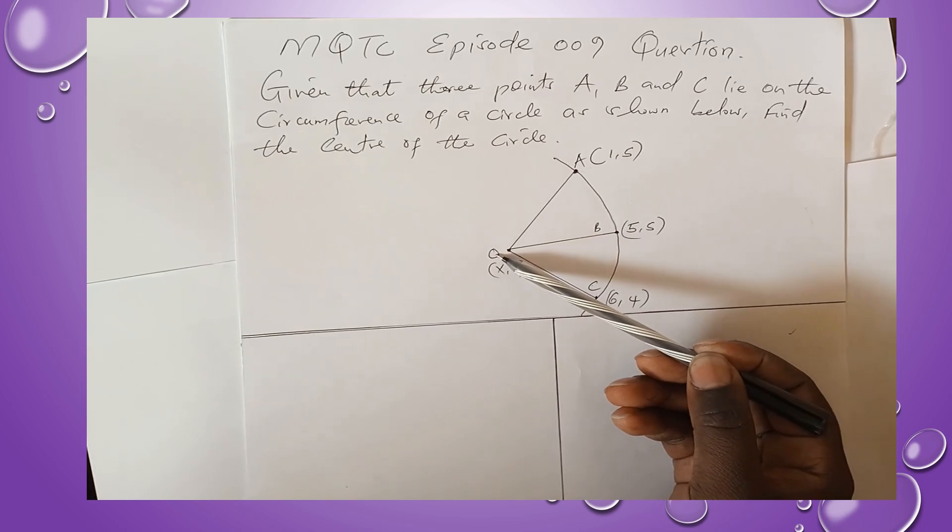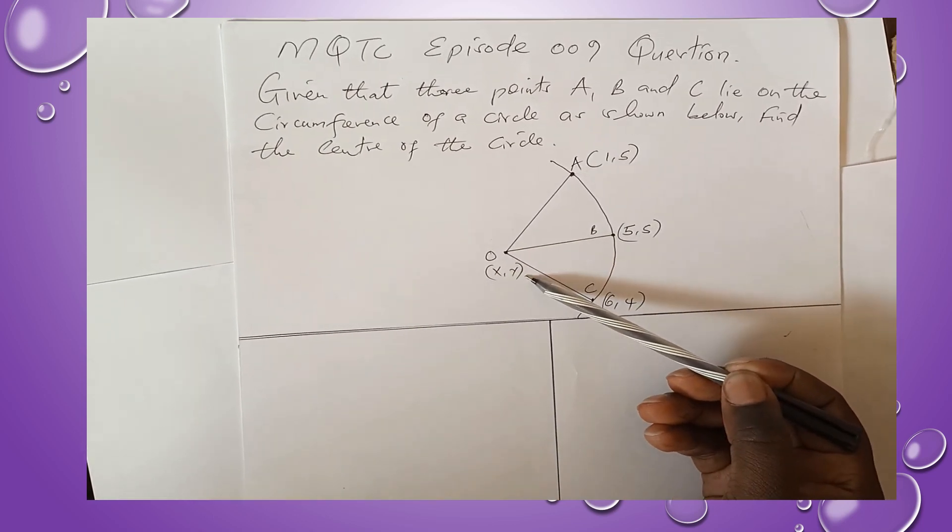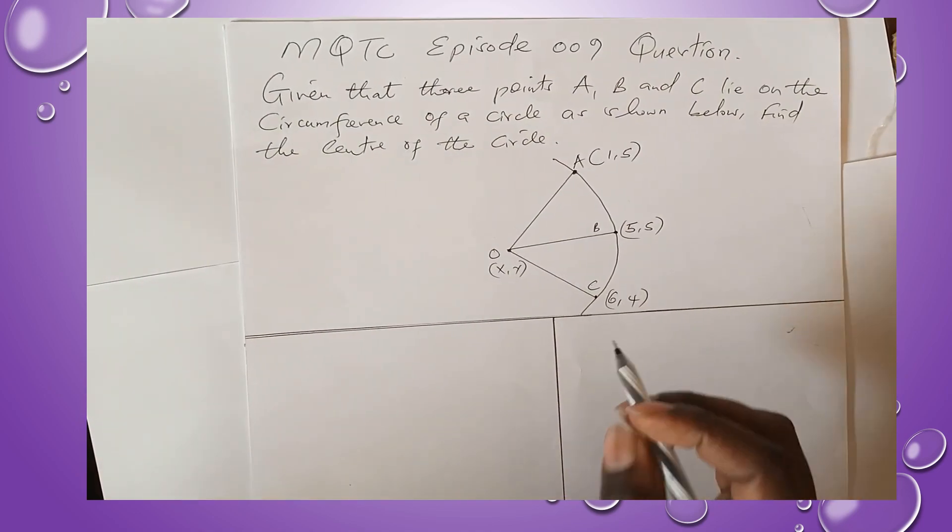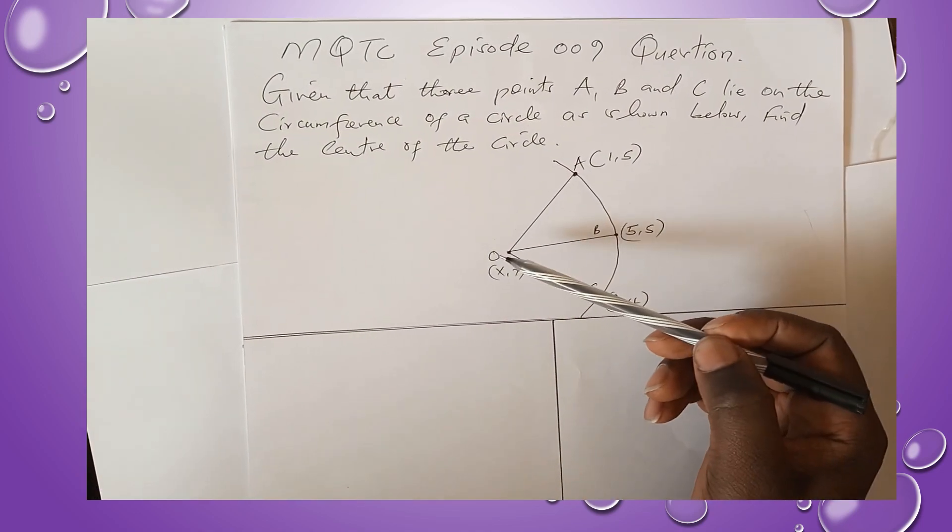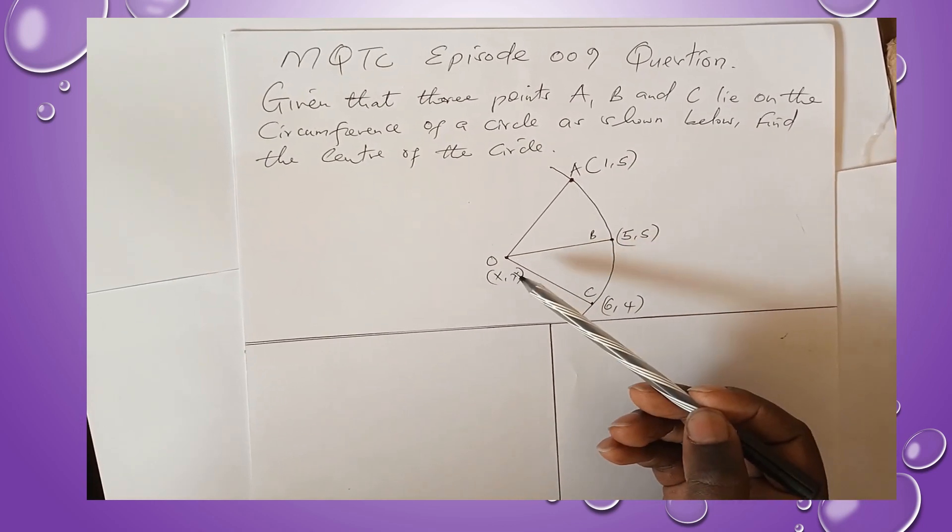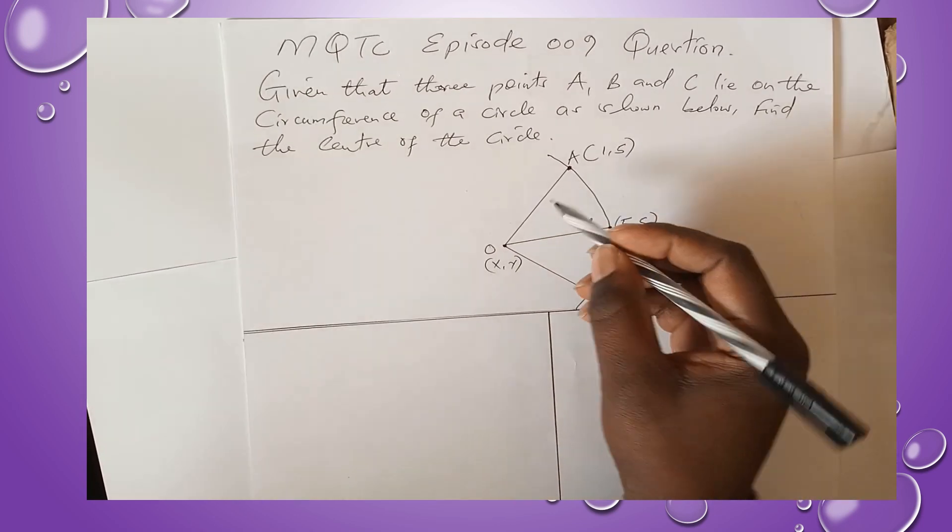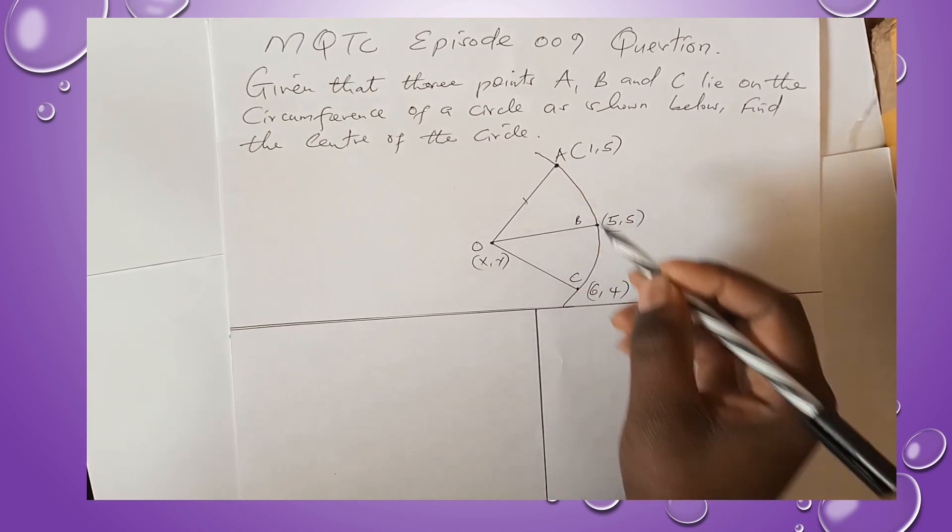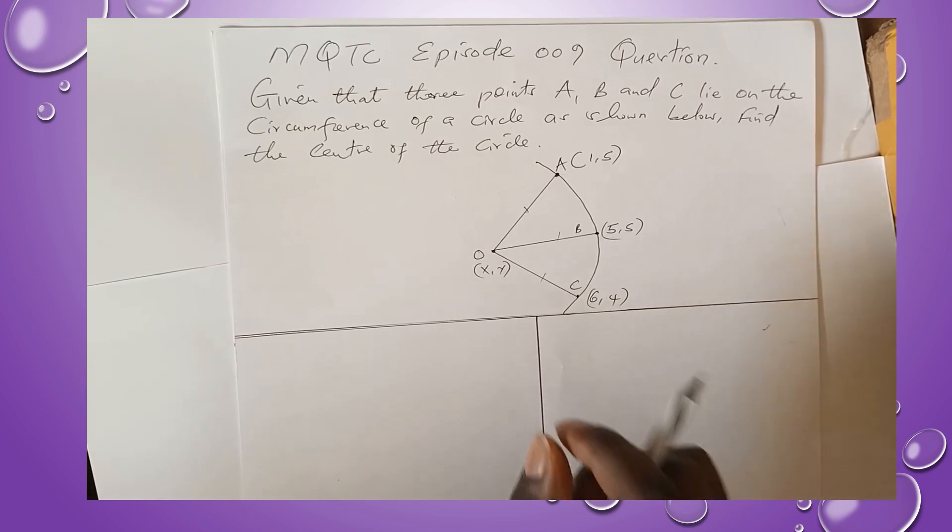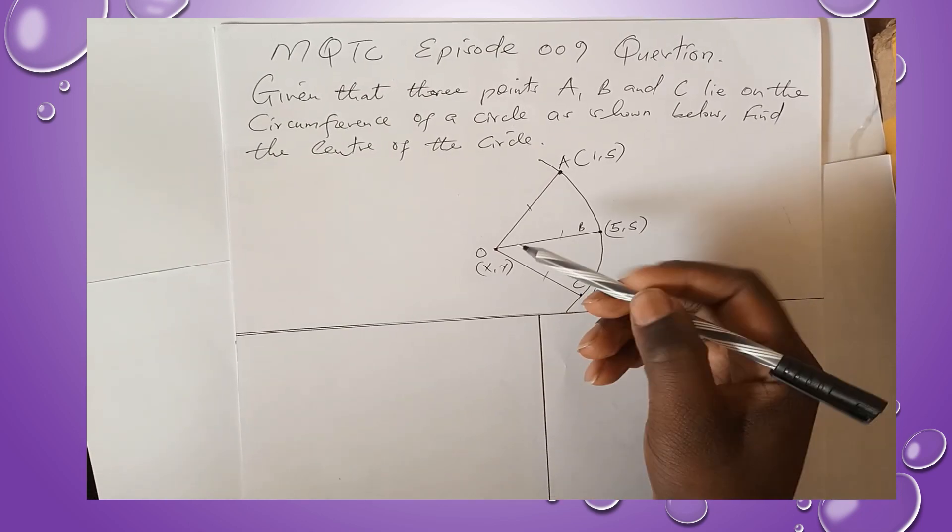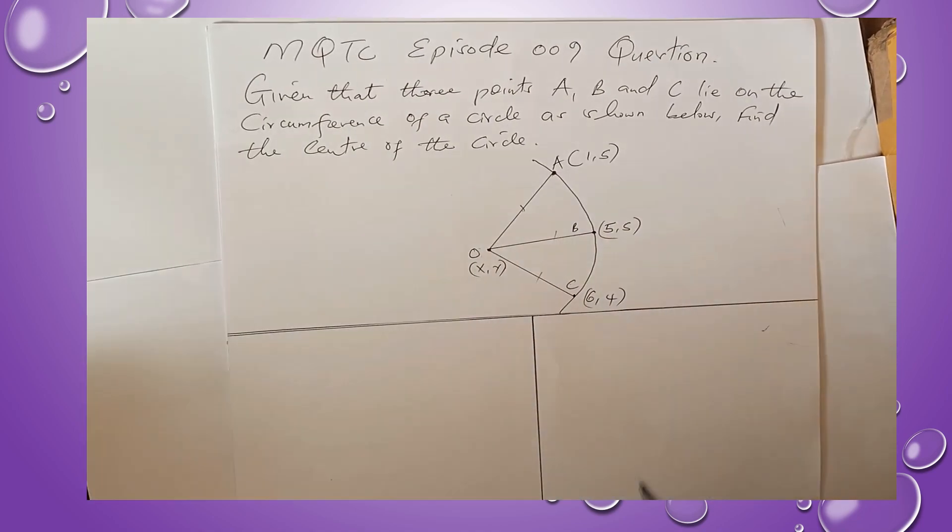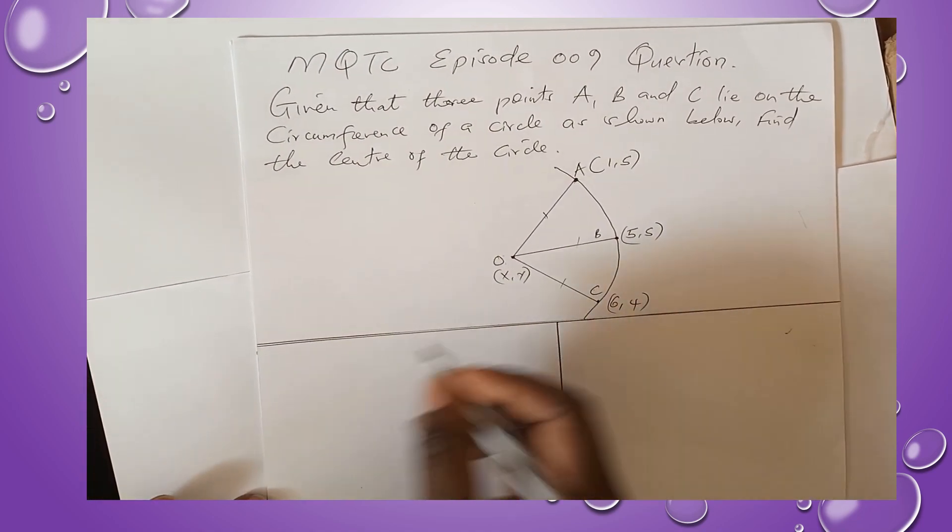We let the center to have the coordinates (x, y). Using the concept of vectors, we can be able to find the magnitude of OA, the magnitude of OB, and the magnitude of OC. Remember that OA, OB, and OC are the radii of the circle, so the radius OA will be the same as OB will be the same as OC.